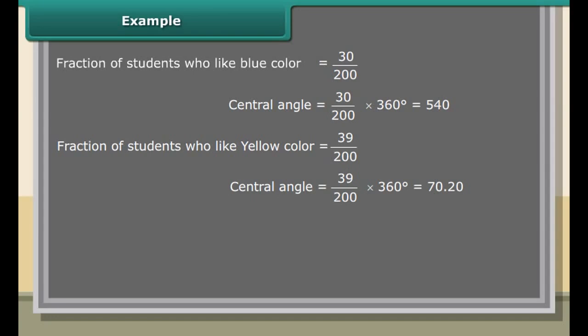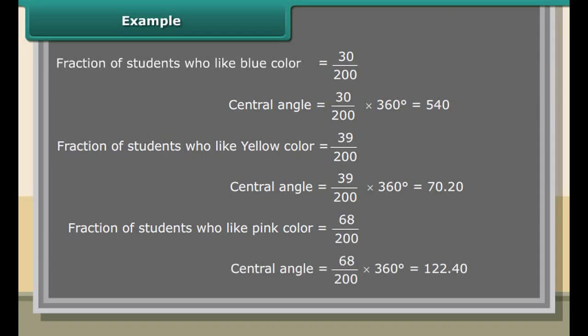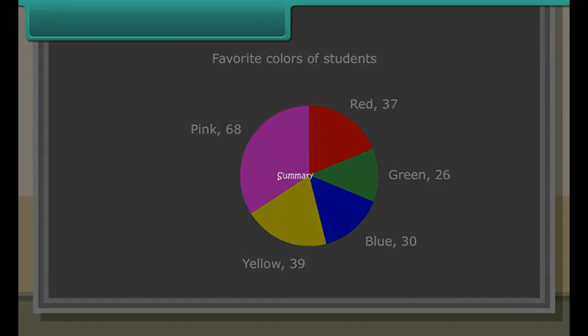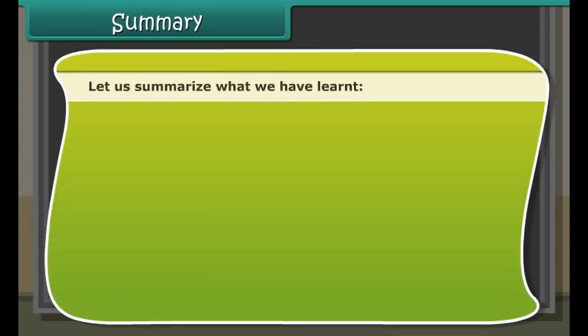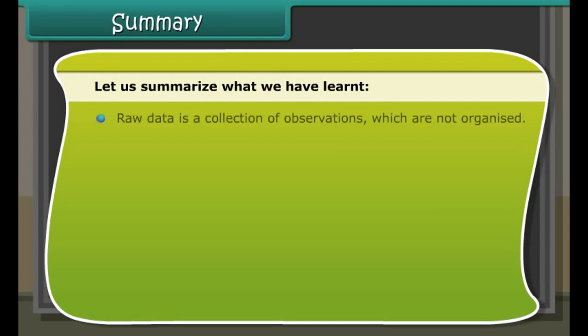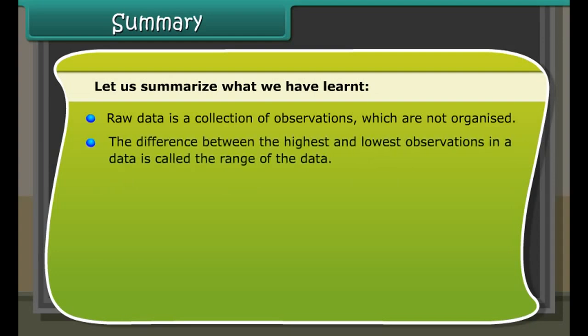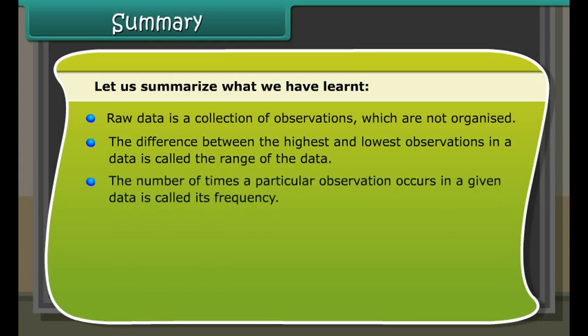Before representing it in a circle graph, we have to do the following steps: find the whole parts, count the number of groups, find what fraction each group has as a whole, and find the central angle and draw the graph according to it. Solution: Total number of students equals 200. Number of groups equals 5. Fraction of students who like red color equals 37 upon 200. Central angle equals 37 upon 200 times 360 degrees, which equals 66.60 degrees.